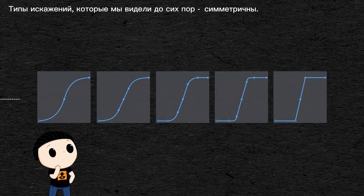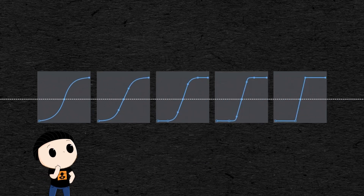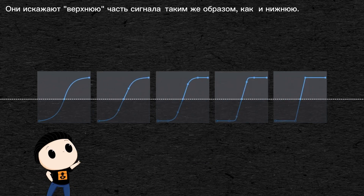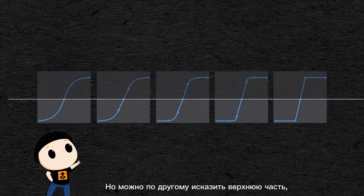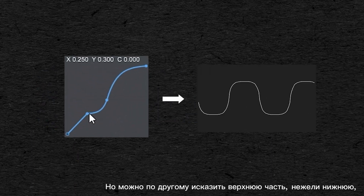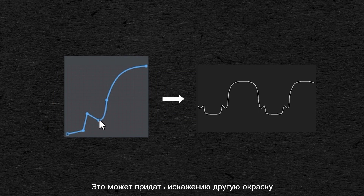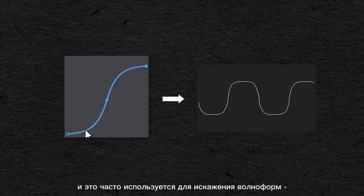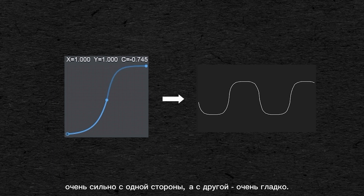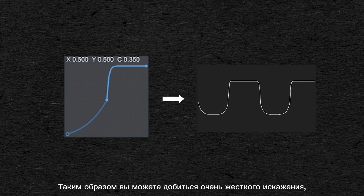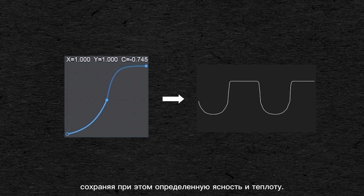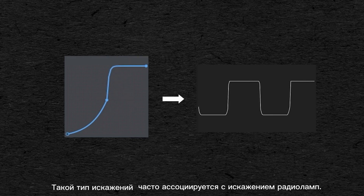The types of distortion we've seen so far are symmetrical — they distort the upper side of the signal in the same way as the lower side. But you can distort the higher part differently than the lower part to make them asymmetrical, which can give a different color to the distortion. This is often used to distort the waveform very hard on one side while having it very smooth on the other side, achieving a very hard distortion that keeps a certain clarity or warmth. This type of distortion is often associated with tube distortion.